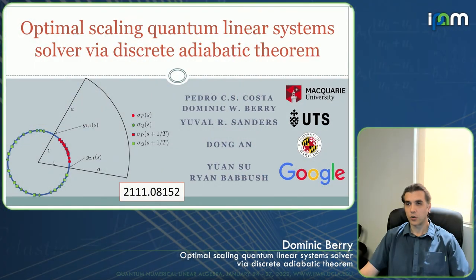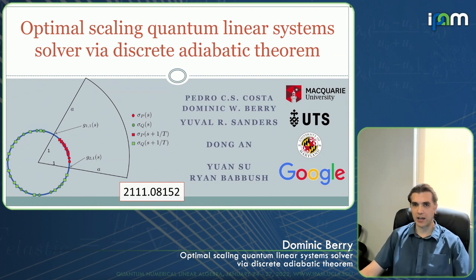This work presents essentially the optimal algorithm for solving linear systems on a quantum computer, in the sense that it has optimal scaling in terms of both the condition number and the allowable error. This is achieved using a form of the discrete adiabatic theorem, which can be used far more generally for speeding up algorithms based on continuous adiabatic evolution for Hamiltonians.